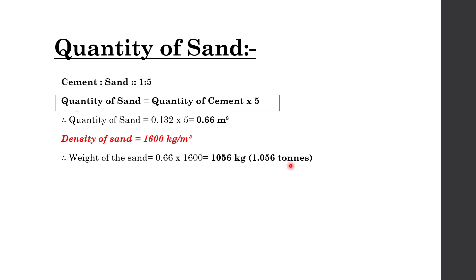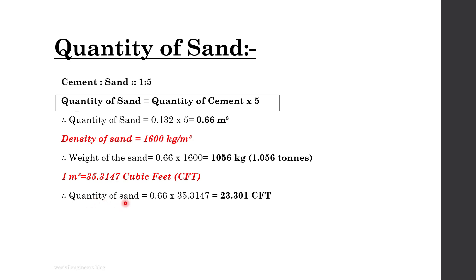In some areas, sand is measured in terms of cubic foot. So to convert the volume of sand from cubic meter to cubic foot, you must know the relation: 1 cubic meter equals 35.3147 cubic feet. So if you multiply 35.3147 by the cubic meter value, you will get the volume of sand in cubic feet. Therefore, quantity of sand in cubic feet equals 0.66 multiplied by 35.3147, giving 23.301 cubic feet.